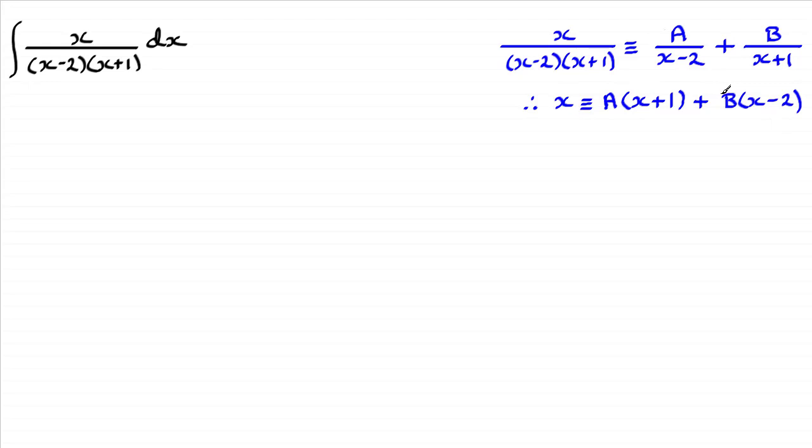And if we set this bracket to zero by making x equal to 2, we'll be able to find out what the value of A is. And so if you do that, let x equal 2, you're going to get 2 here equals 2+1, which is going to be 3A. And this is going to be B times 0, which is just simply 0. So you're left with 2=3A, which leads you to A=2/3.